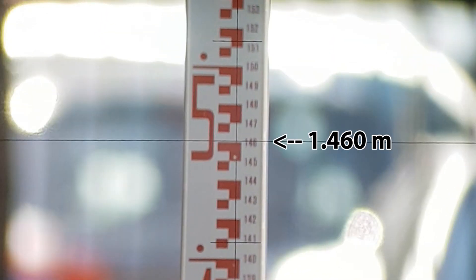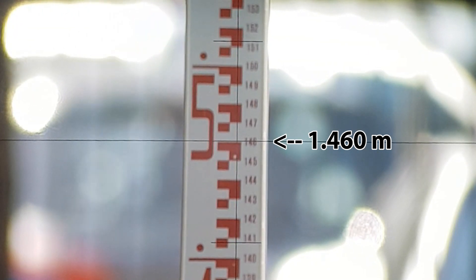So that little crosshair denotes the number that you are going to be reading. In a moment I'll zoom in so you can read a little better. So here we can see it's 146 centimeters or 1.46 meters.